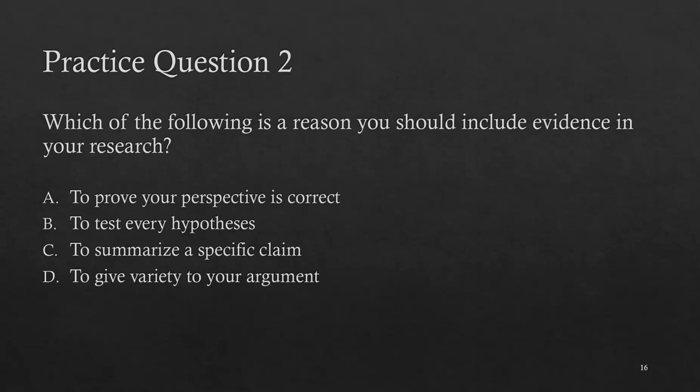Here's practice question number two: Which of the following is a reason you should include evidence in your research? A — to prove your perspective is correct; B — to test every hypothesis; C — to summarize a specific claim; or D — to give variety to your argument. We can get rid of B because we can't test every hypothesis — that's not humanly possible. The best answer is A: to prove your perspective is correct.